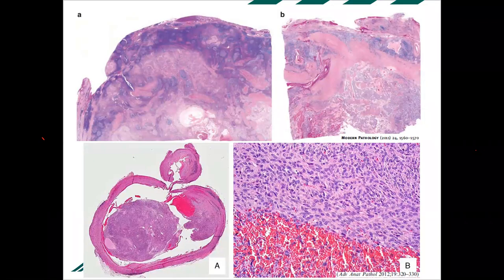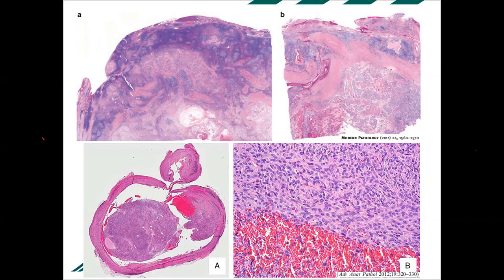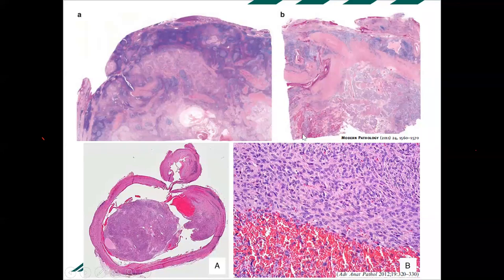A classic case of angiomatoid fibrous histiocytoma resembles a lymph node: well circumscribed with a fibrous pseudocapsule and lymphoid aggregates that can have germinal centers. In the old days, this was misdiagnosed as metastasis in a lymph node. The cells look histiocytoid, growing in a sheet-like or swirling pattern. About 50% have pseudovascular spaces lined not by endothelial cells but by tumor cells — hence 'angiomatoid' — but 50% will not show these spaces at all; they are solid.